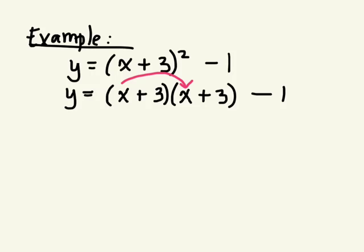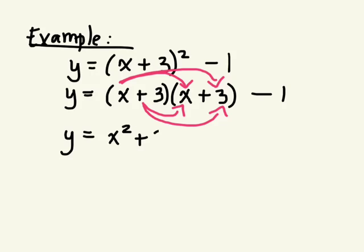x times x, and then x times 3, and then 3 times x, 3 times 3. x times x is x squared, 3 times x, then 3 times x again, then 3 times 3. And then we have to take away 1 at the end, right? That was outside of the bracket.